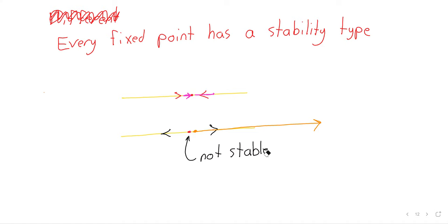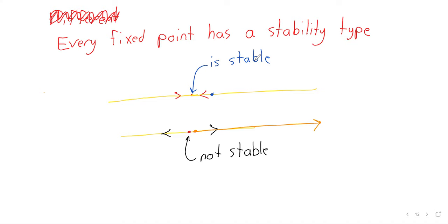On the other hand, the fixed point we have here is stable. If an initial condition starts near the fixed point, it remains near the fixed point. In fact, it does something better than that — if an initial condition starts near the fixed point, not only does it remain near it, it actually gets closer to it. It goes towards the fixed point.